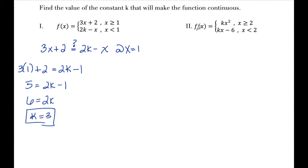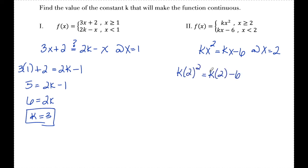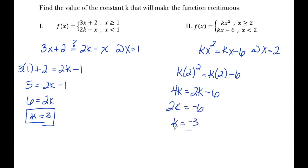Same idea for number 2: to make this continuous, kx squared and kx minus 6 must be equal when x equals 2. Plugging in 2 — 2 squared is 4, giving 4k on one side and 2k minus 6 on the other. Subtracting 2k from both sides gives k equals negative 3.